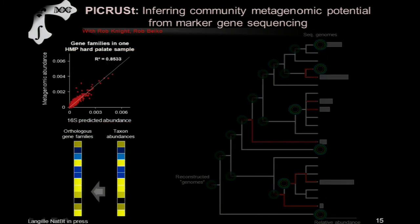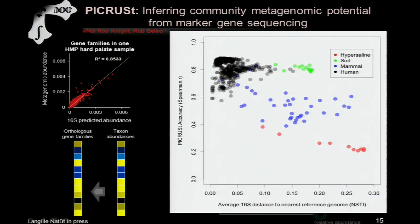We've performed a wide range of validations on this process. In general, it's possible to get good correlation between 16S-based predicted abundances of microbial genes and measured abundances in validation data where we have paired 16S and shotgun data sets for the same samples. We've performed these validations on hundreds of paired examples from the Human Microbiome Project, where we tend to achieve very high correlations in predicted versus measured abundances, and carried these out in other communities as well where we have generally lower reference genome coverage.